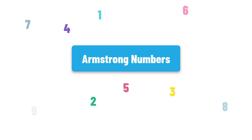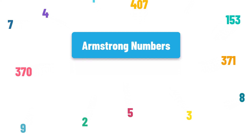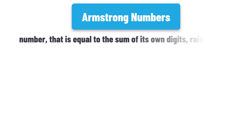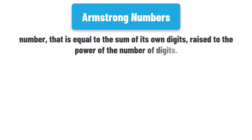Armstrong numbers. What does this definition mean? How to check if a number is an Armstrong number — let's learn more about that. An Armstrong number is a number that is equal to the sum of its own digits raised to the power of the number of digits.